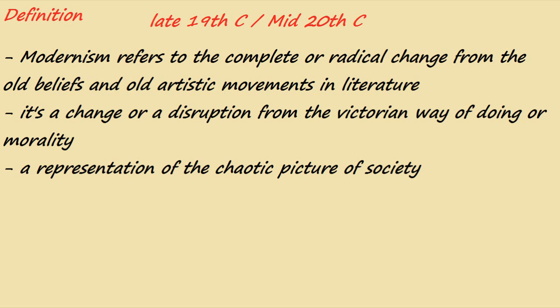When we talk about the change from old beliefs and a disruption from the Victorian way of doing, it means that before modernism there was an era called the Victorian era. Anything related to that era — notions, ideas, literature — modernist authors wanted to give up on those ideas. They wanted to create something new, something modern.